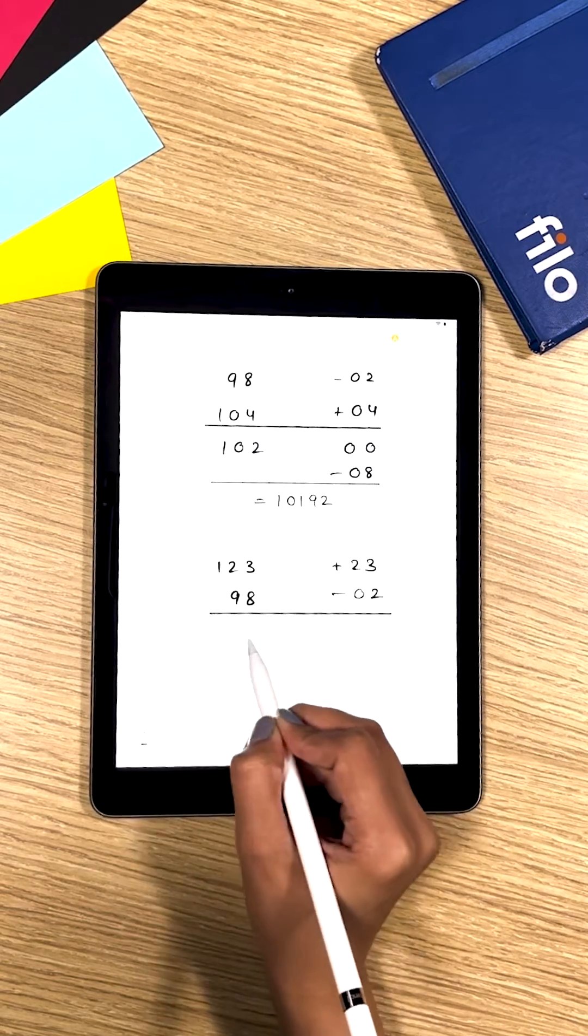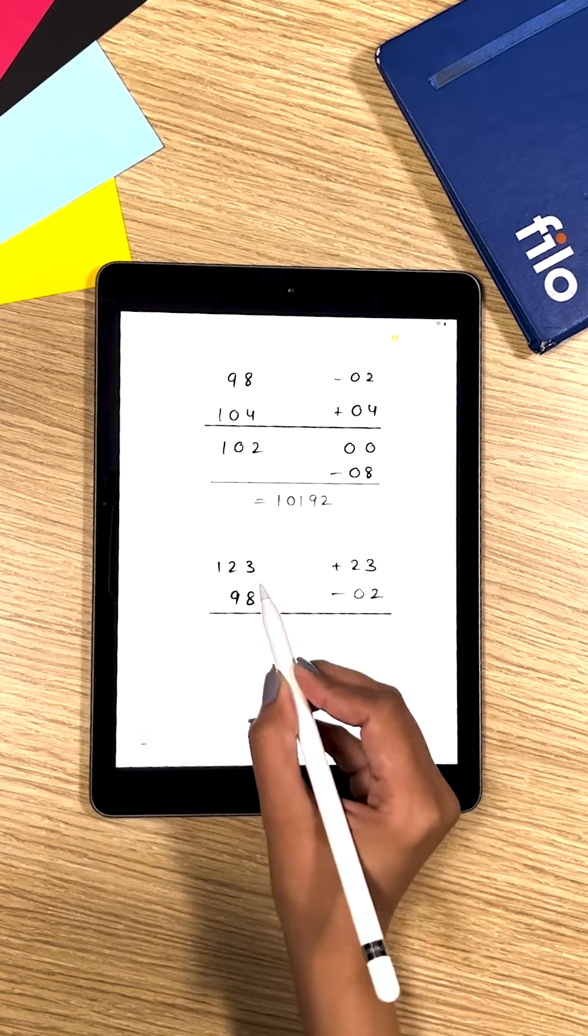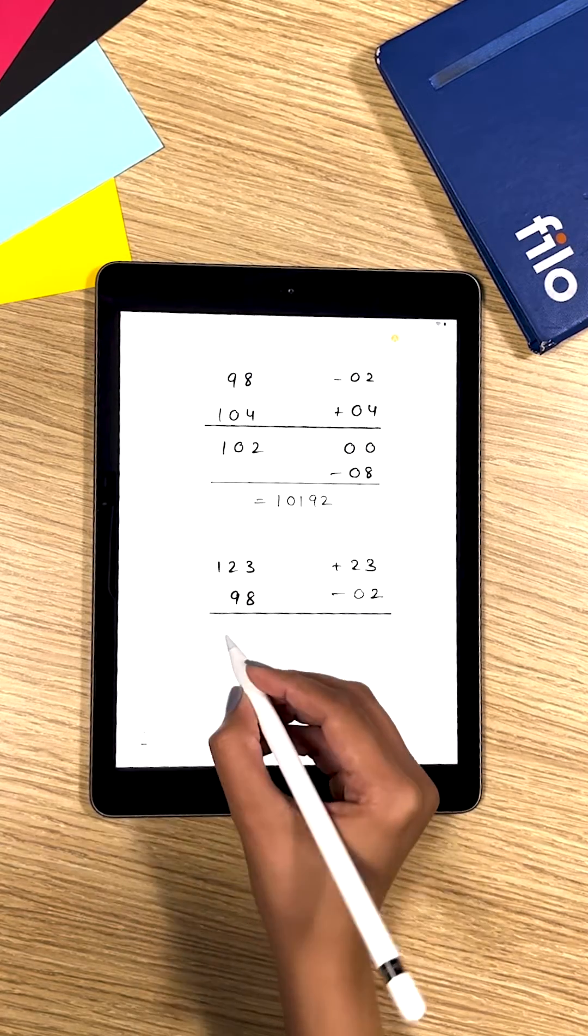Now to get the first part of the answer you subtract 2 from 123 because that's a smarter way to do it.